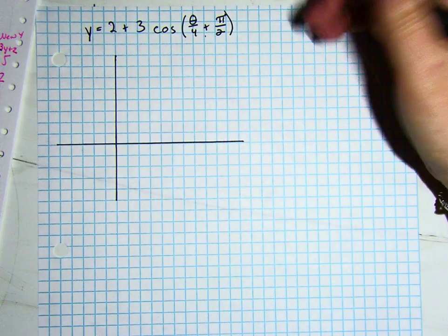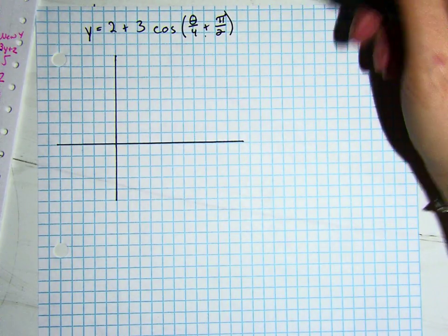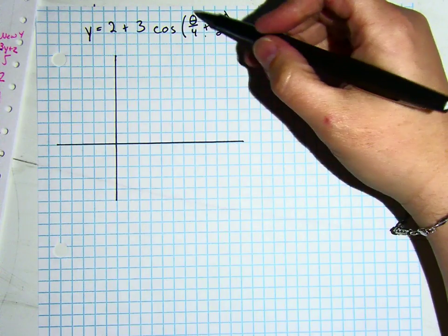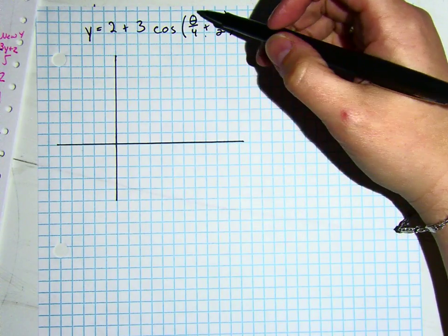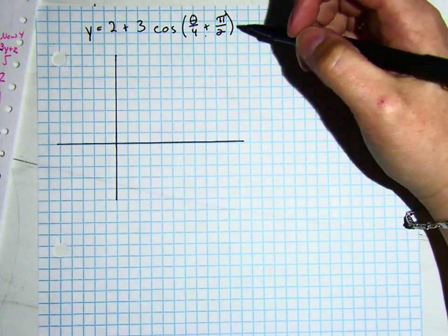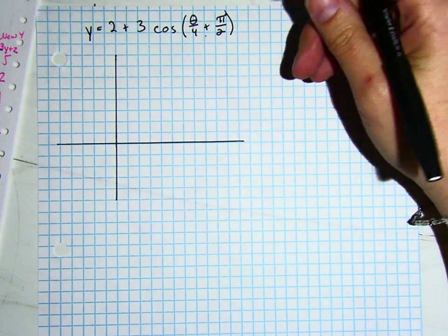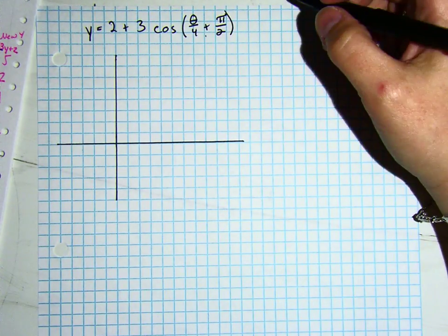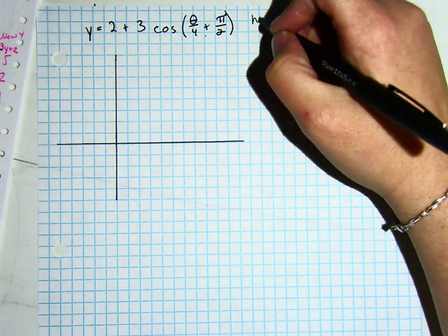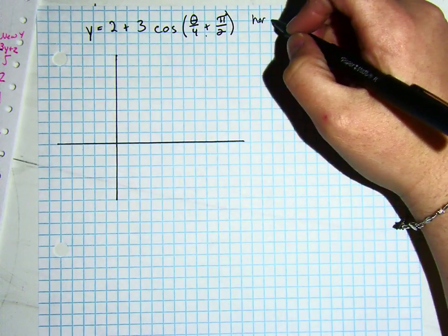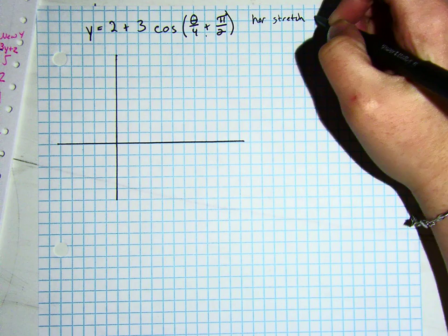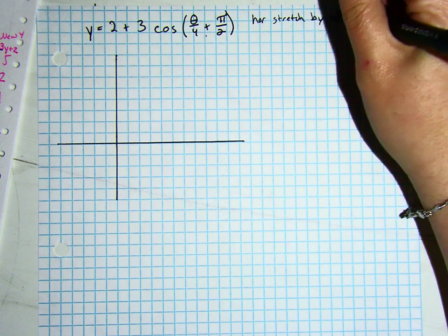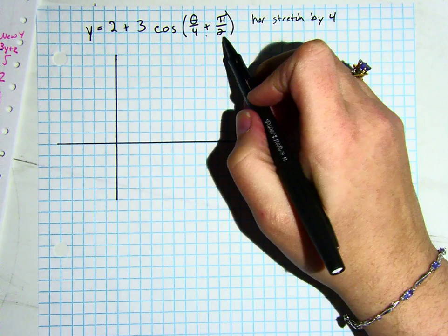Working inside, remember that everything works the inverse of what you actually think it does. So start with your multiplication or division. Theta divided by 4. Dividing by 4, we normally think getting smaller, so this is going to be the inverse of that. So we are horizontally stretching the graph by a factor of 4.